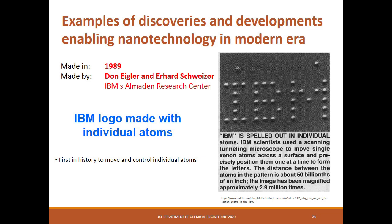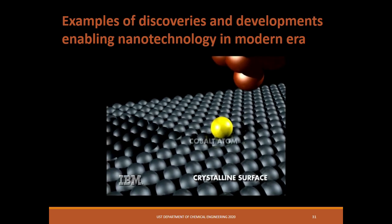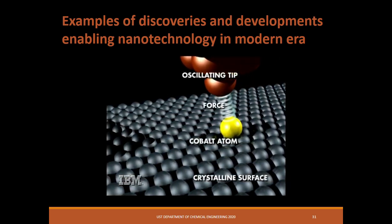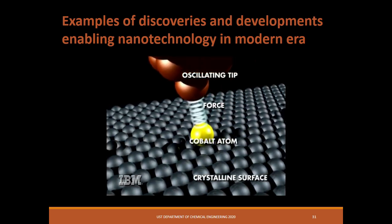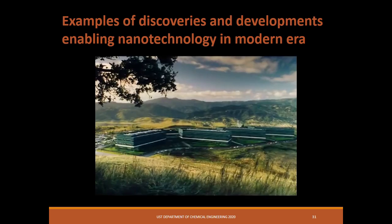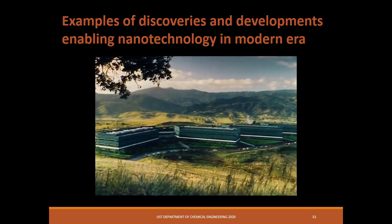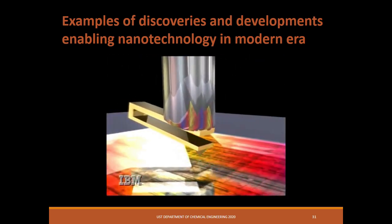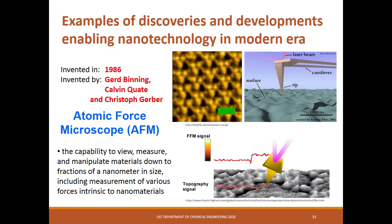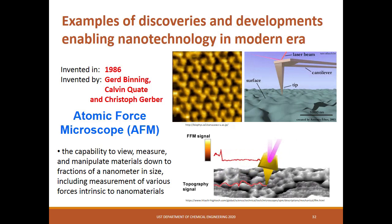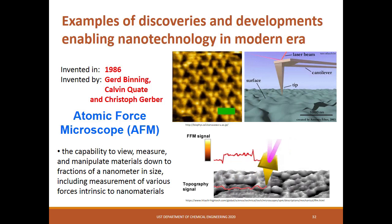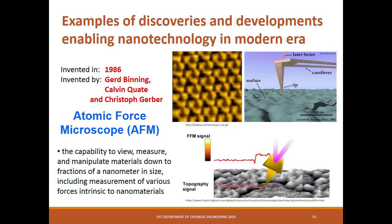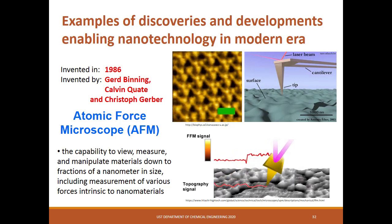IBM announced a milestone in the ability to manipulate and understand matter at the atomic level. Scientists at IBM's Almaden Research Center in San Jose, California demonstrated for the first time the ability to measure exactly how much force is needed to move individual atoms. In the same year Binnig and Rohrer received the Nobel Prize in Physics, a major breakthrough was made with the invention of the atomic force microscope, or AFM, by Binnig, Quate, and Gerber, which continues to revolutionize nanoscale characterization and measurements.